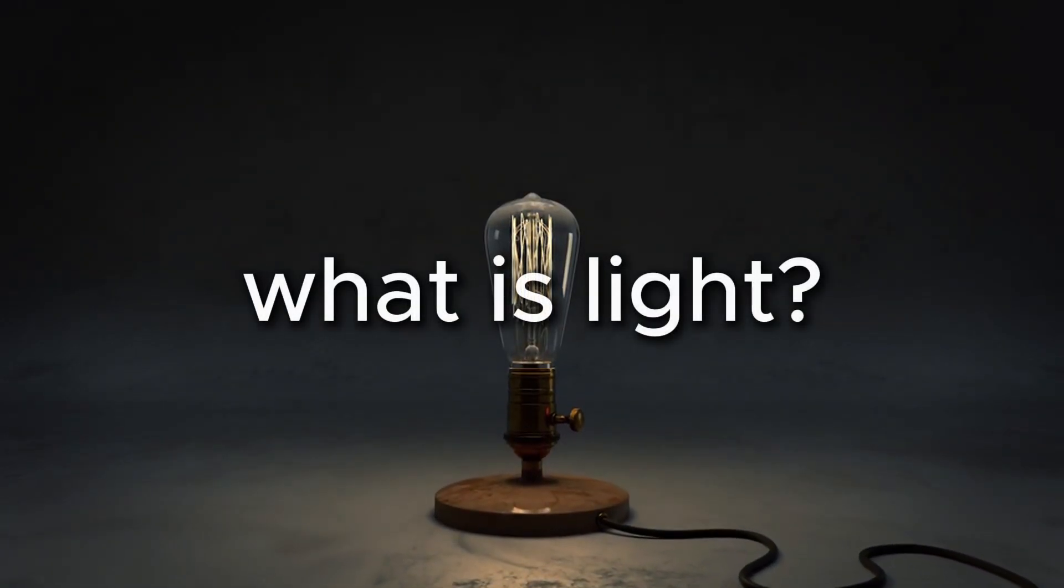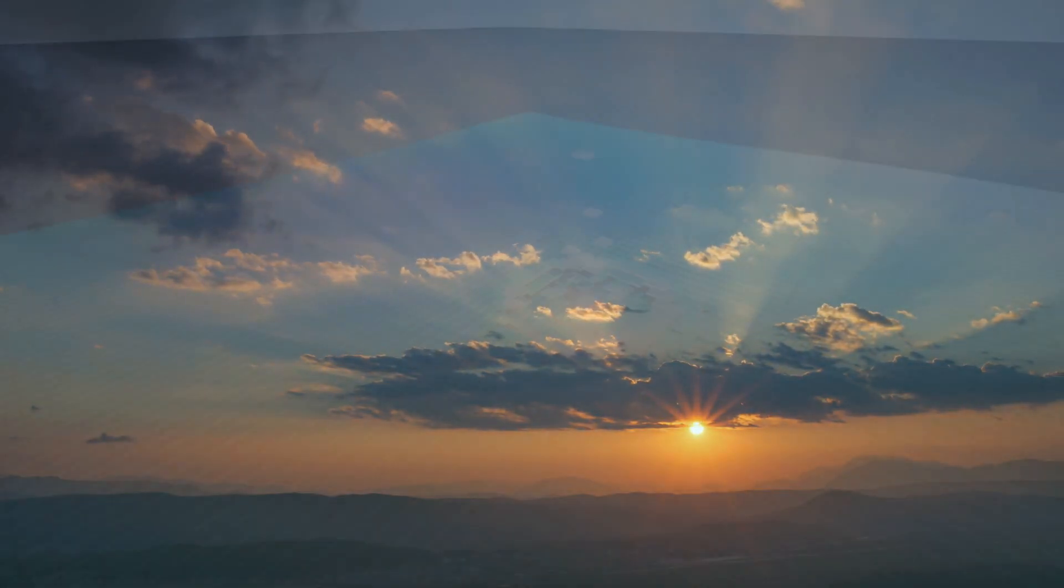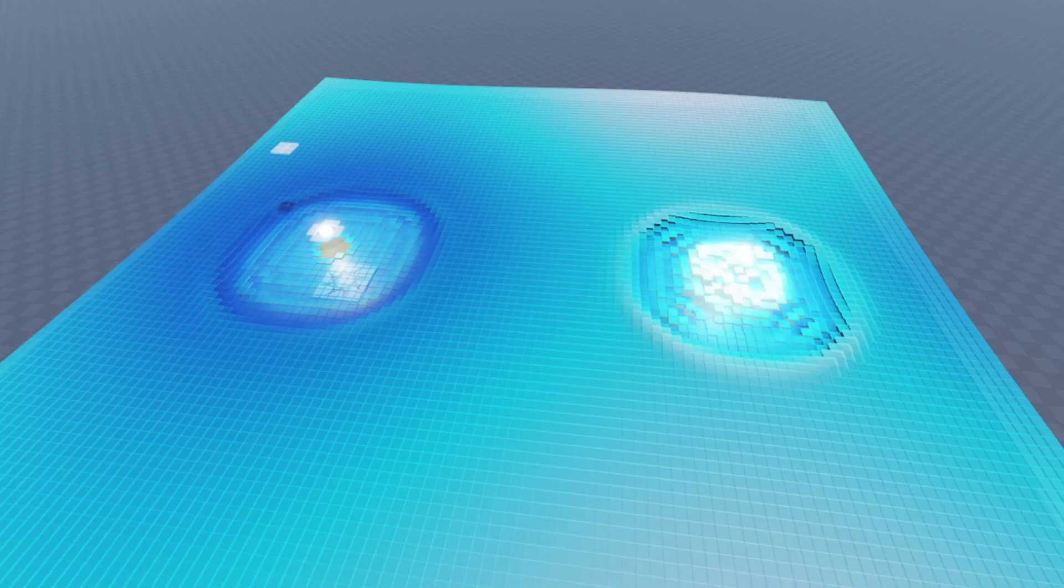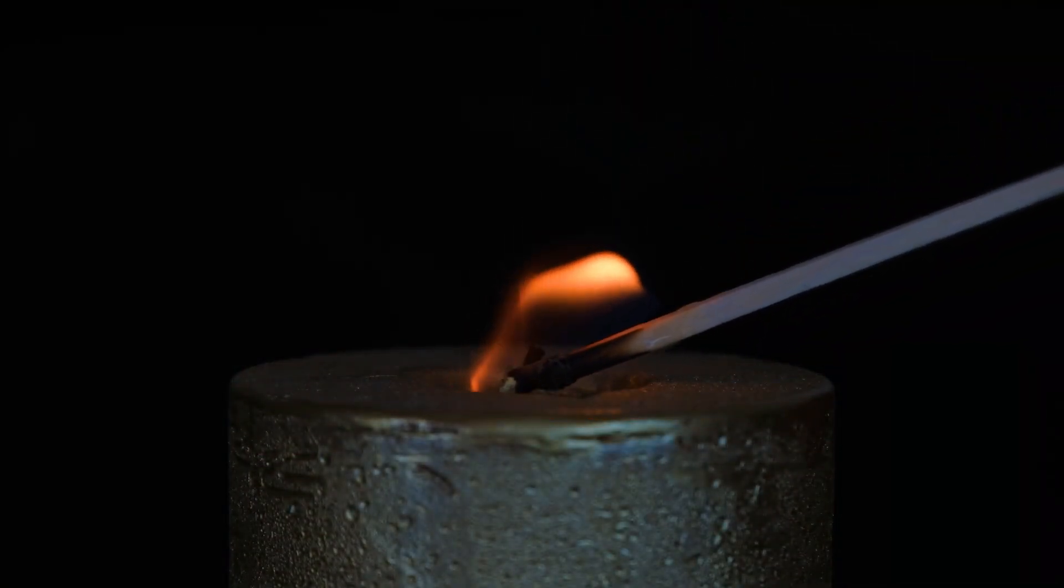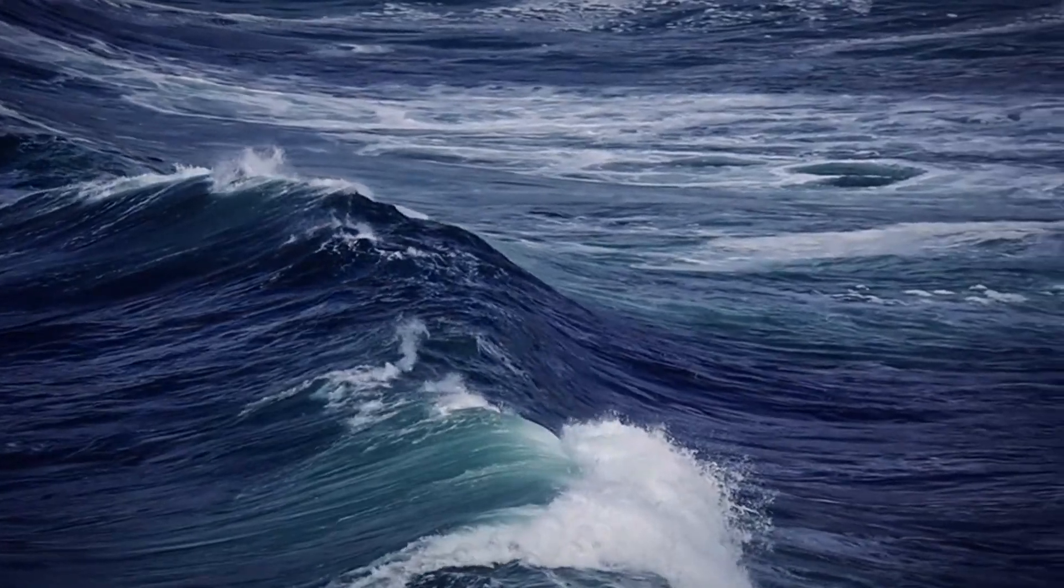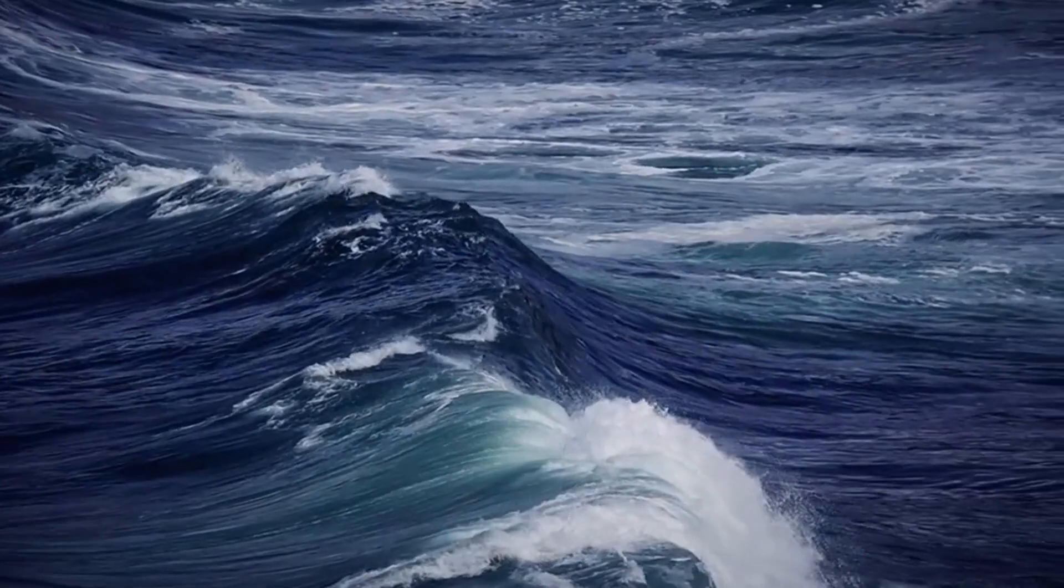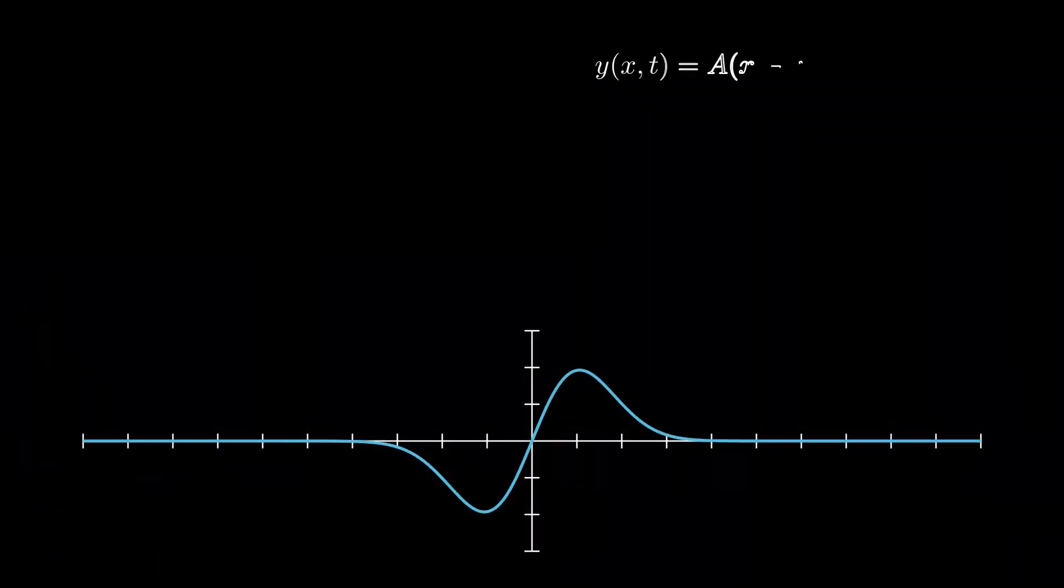What is light? Something that makes vision possible. And that ripple you're seeing? It's a clue. But before we talk about light, we need to understand something deeper. What is a wave? A wave is a disturbance, a vibration that travels through space or matter carrying energy.